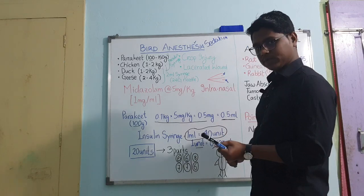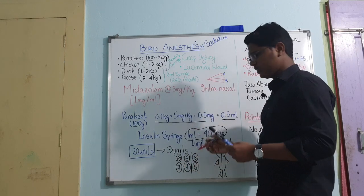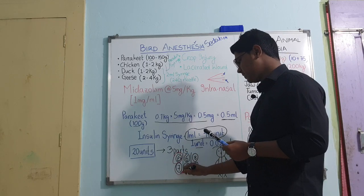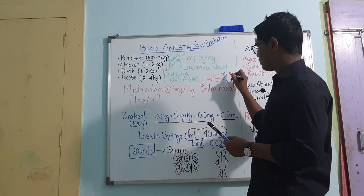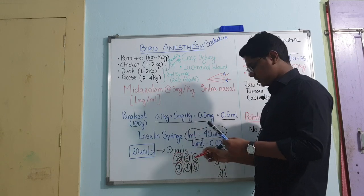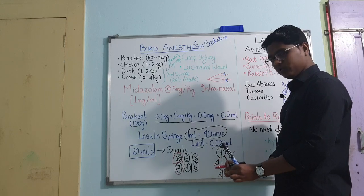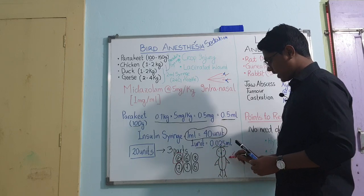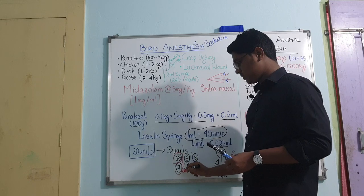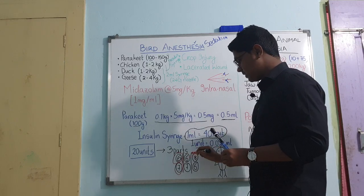Divide the 20 units of midazolam into three parts — either 6, 6, 8 or 7, 7, 6 according to your preference. Give the first part dropwise into both nasal openings intranasally, then check the righting reflex. The righting reflex means the animal should be able to stand on its two legs; when the righting reflex is gone, it will fall to one side.